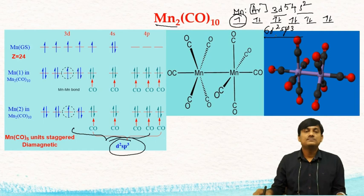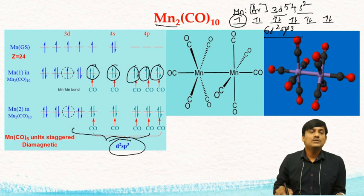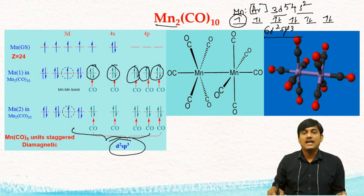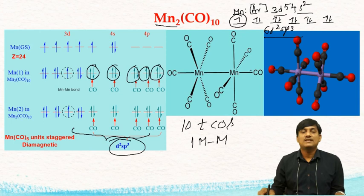This is the electronic configuration of manganese in Mn₂CO₁₀. The electrons donated from 5 CO ligands fill the empty orbitals, leaving one unpaired electron. This unpaired electron overlaps with another unpaired electron on the second manganese, forming a manganese-manganese bond. Each manganese is connected with 5 CO ligands, giving 10 terminal COs and one metal-metal bond in Mn₂CO₁₀.